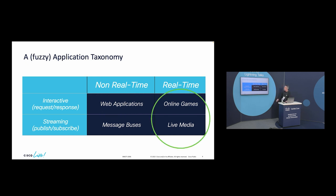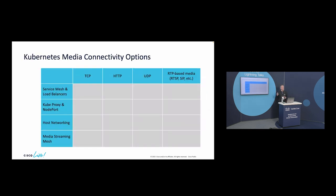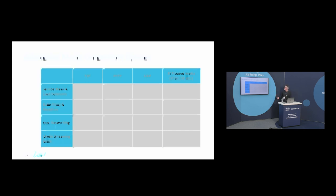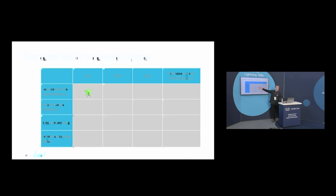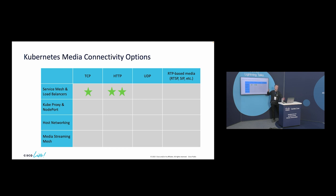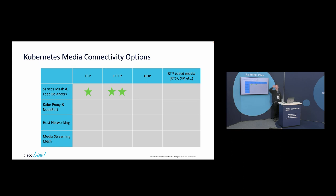We're looking at real-time, but particularly I want to focus on live media today. The project's called Media Streaming Mesh, and it's really an open source project trying to address this in Kubernetes. If I come today and say I've got some media I want to put on Kubernetes, what are my options? Using service meshes, which are very popular in Kubernetes — the problem is they handle TCP. They're brilliant for web apps, can do URL routing, but they don't handle UDP and certainly don't handle real-time media.